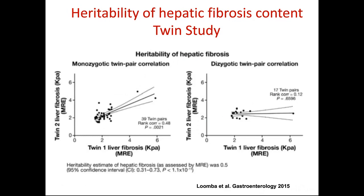An interesting study from UC San Diego by Rohit Loomba's group looked at liver stiffness in monozygotic versus dizygotic twins. Even though there was a statistically significant stronger correlation in the monozygotic twins, most of the variability was still attributable to something other than genes. So genes in and of themselves are really not going to be helpful, at least not yet, for developing a risk stratification or screening strategy for fatty liver disease. That may change over time, but with what we have today, it's not possible to use genes on their own.